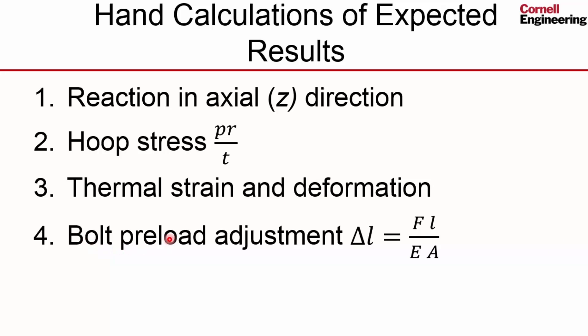We can also do a bolt preload adjustment estimate using this particular formula over here. This assumes that the flanges are infinitely rigid, and in this case, that's not the case. There's quite a bit of deformation in the flanges, so that hand calc doesn't work out all that well. I won't be covering that hand calc here in the interest of time.